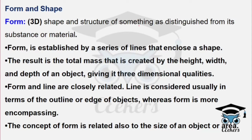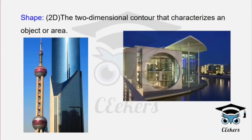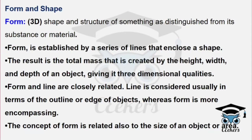The shape and structure of something is distinguished from the substance or material. Form refers to the total mass created by the height, width, and depth of an object — it means three-dimensional quality. We can develop a 3D item by filling the enclosed space.